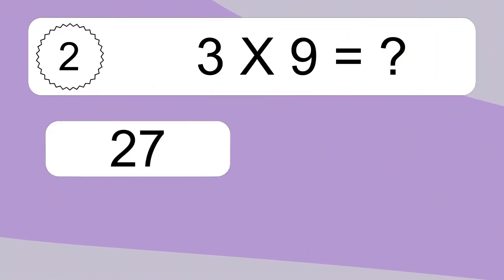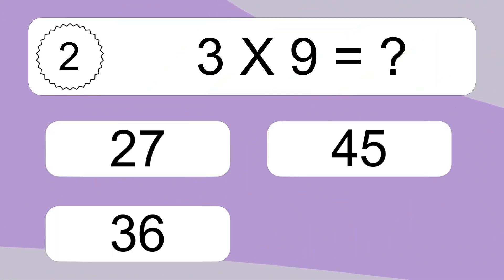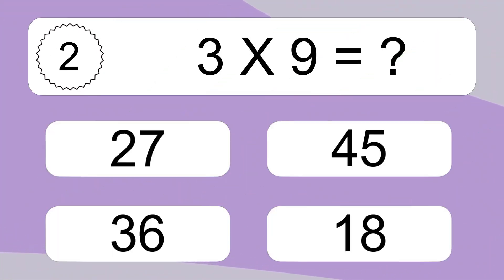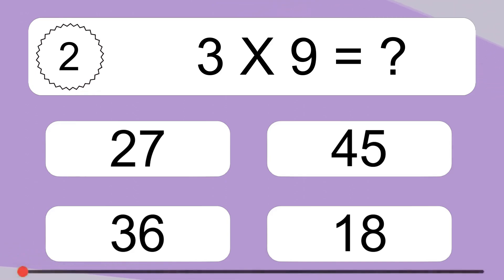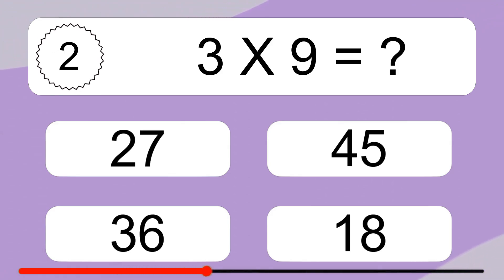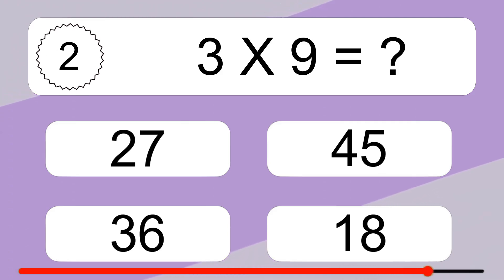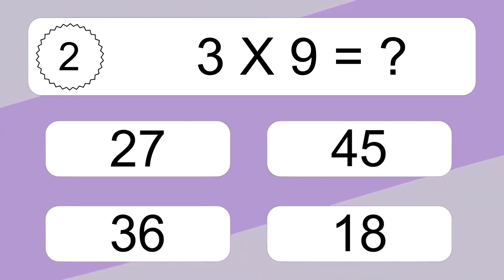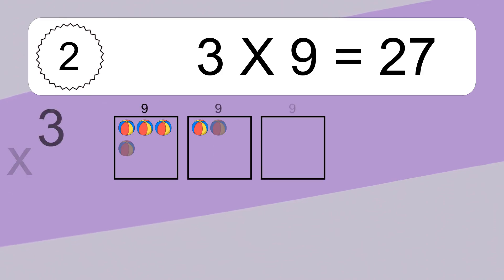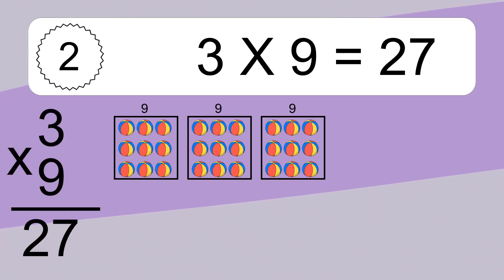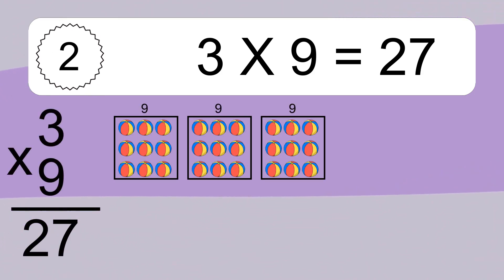3 times 9 equals what? 3 times 9 equals 27.